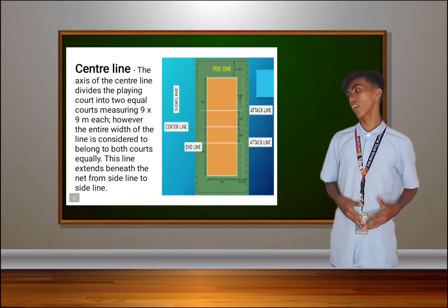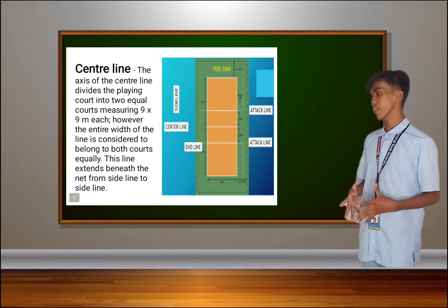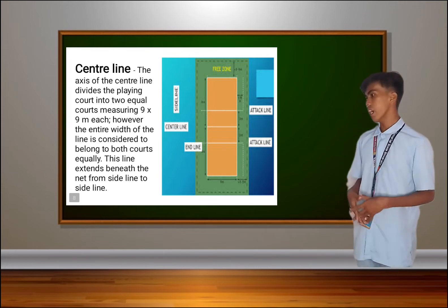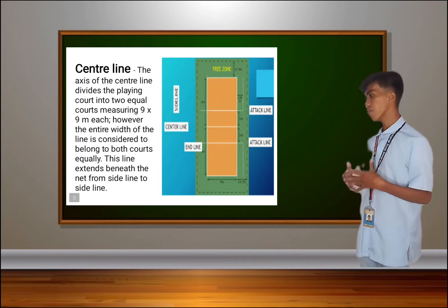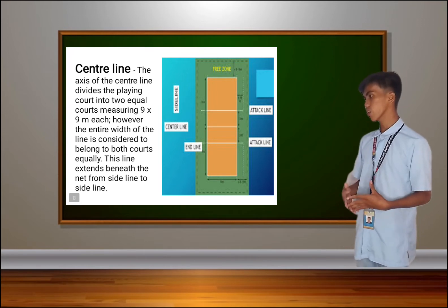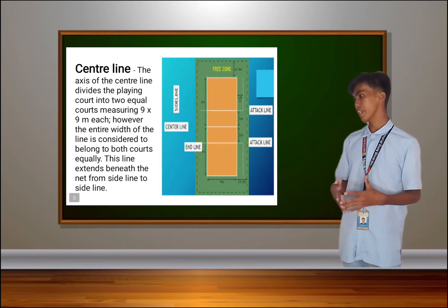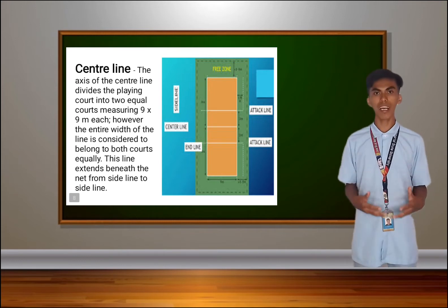Next is the center line. The axis of the center line divides the playing court into two equal courts measuring 9 by 9 meters each. However, the entire line width is considered to belong to both courts equally. This line extends beneath the net from side line to side line.